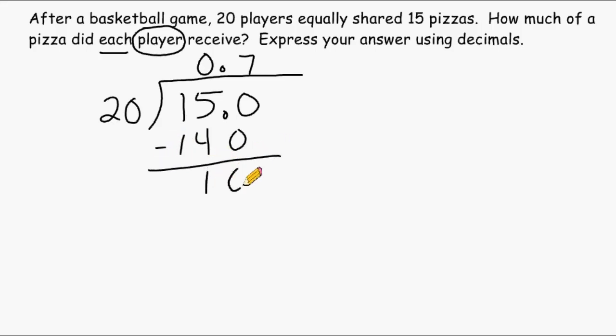And because we still have a remainder, we have to add a zero in the very next place value, which is the hundredths place, and drop that zero down. Then we go back to our divisor of 20 and divide it into 100. And 20 fits into 100 exactly five times. And now that leaves us with no remainder.